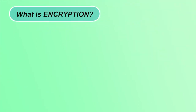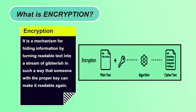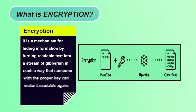Let's start with encryption. It is a mechanism for hiding information by turning readable text into a stream of gibberish in such a way that someone with the proper key can make it readable again. It is a process of converting plaintext to ciphertext such that only the person who has the key will be able to read that message.